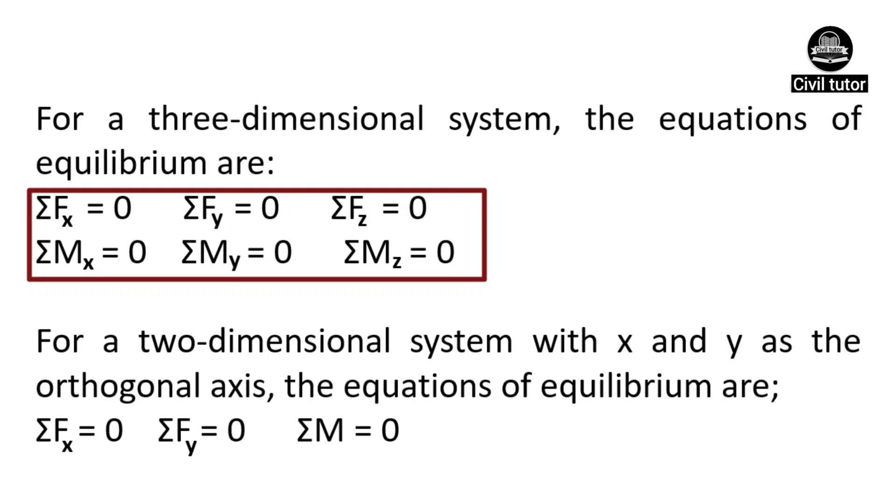For a two dimensional system with x and y as the orthogonal axis, the equations of equilibrium are: summation of all the forces along x and y direction is equal to zero, and summation of all the moments is equal to zero.